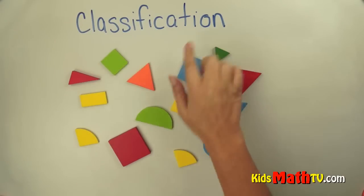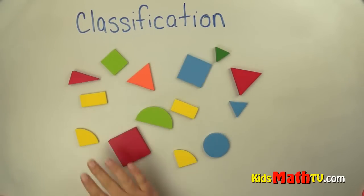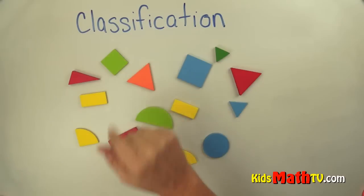In this lesson you will learn about classification. Here we have a bunch of different shapes we're going to classify or group them in some different ways. The first way we're going to group them is by color.